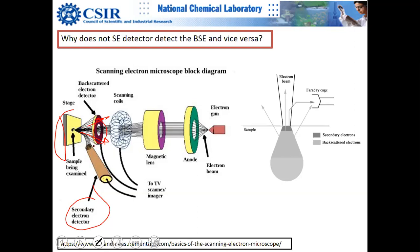The positive voltage on the secondary electron detector is not strong enough to deflect backscattered electrons. This design is called the Everett-Thorne detector. Newer in-lens detector designs have been developed since.